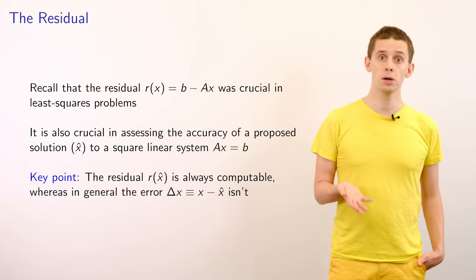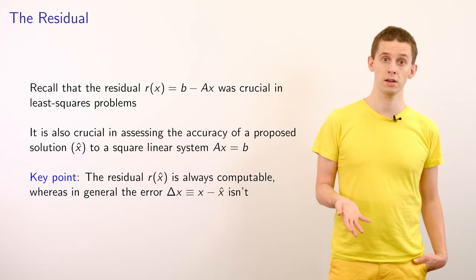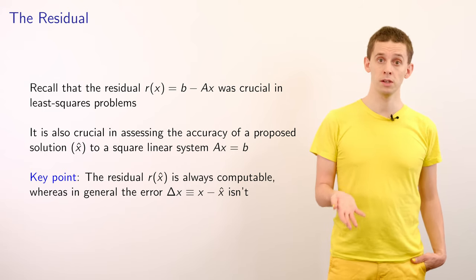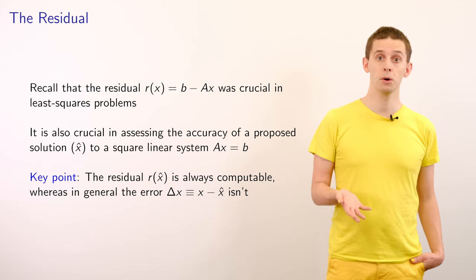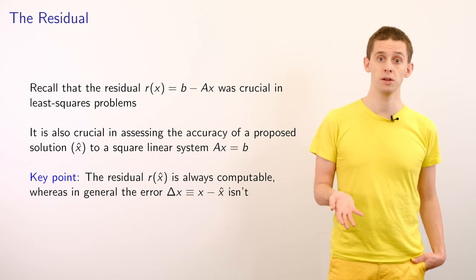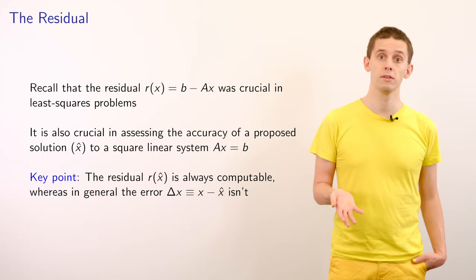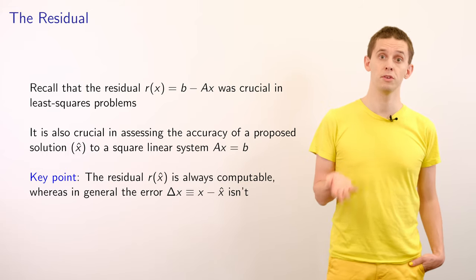Now if we look at the norm of Δx, that will be equal to the norm of x minus x̂, and that will be equal to 0 if and only if the residual of x̂ is equal to 0. However, a small residual doesn't necessarily imply that we have a small norm of Δx.